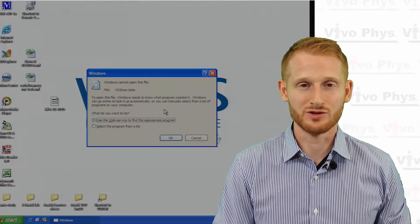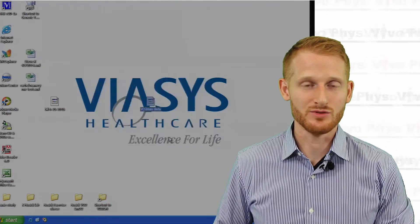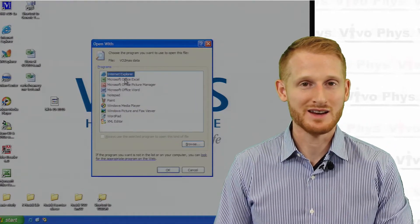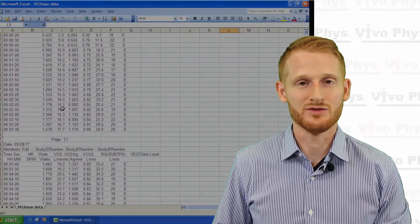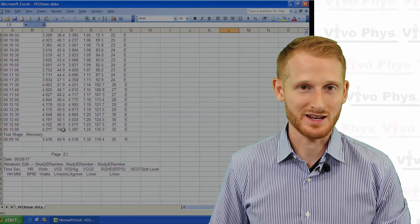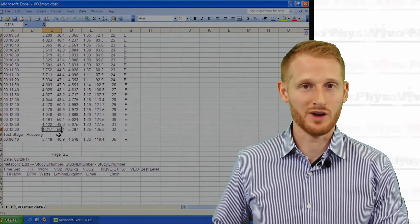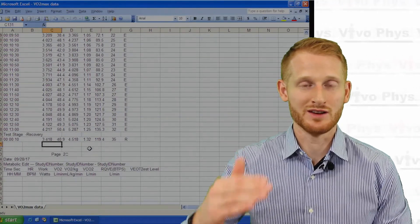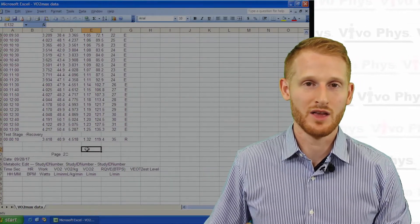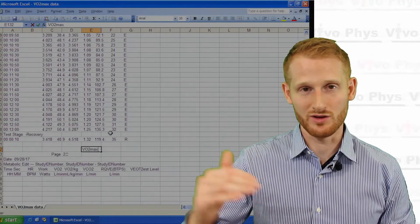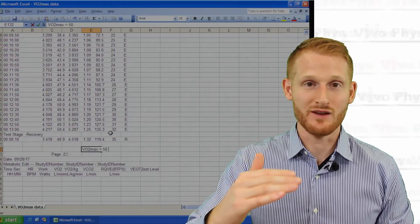Once you've done that, you essentially have a text file. It may not be recognized as a text file, but it will function as a text file if you try to open it in a text editor or in Excel. You can then look through the data and find the VO2 max of the person as well as find what their VO2 and several other parameters were every 10 seconds because we saved it as a 10-second average file.